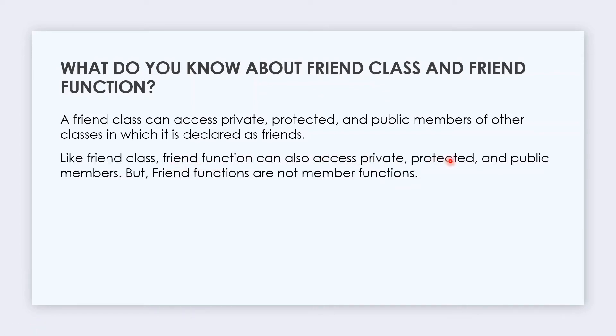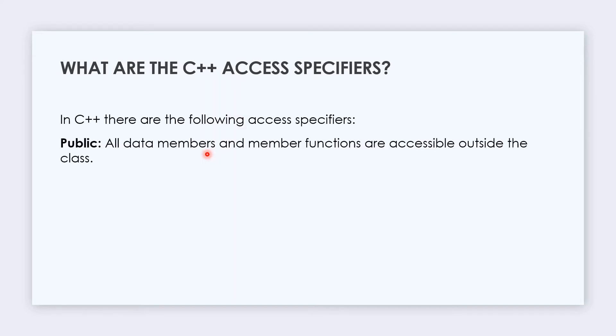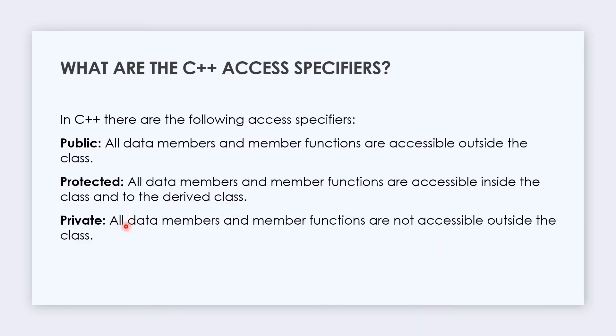Friend functions can also access private, protected, and public members, but friend functions are not member functions. What are C++ access specifiers? Public means all data members and member functions are accessible outside the class. Protected means all data members and member functions are accessible inside the class and to the derived class. Private means all data members and member functions are not accessible outside the class. This is where friend function comes into picture, where we can access private access specifier content.